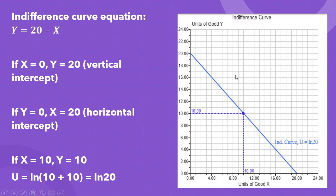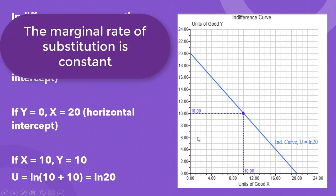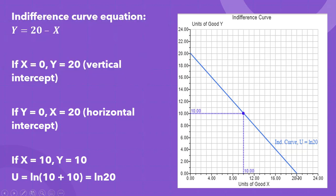So in terms of what this indifference curve looks like, it is a downward sloping straight line. This is an example of perfect substitutes. So here is where x equals 0 and y equals 20. Here is where y equals 0 and x equals 20. And here is where x and y both equal 10.